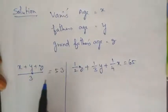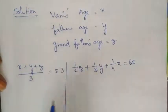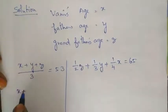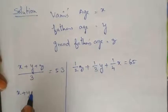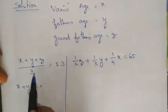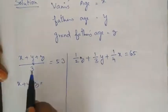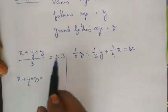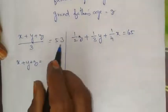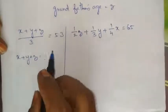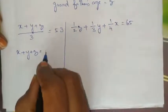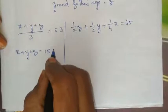From the first equation, x plus y plus z equals 53 multiplied by 3, which equals 159.